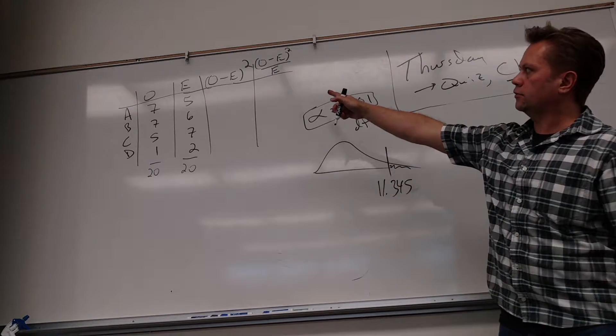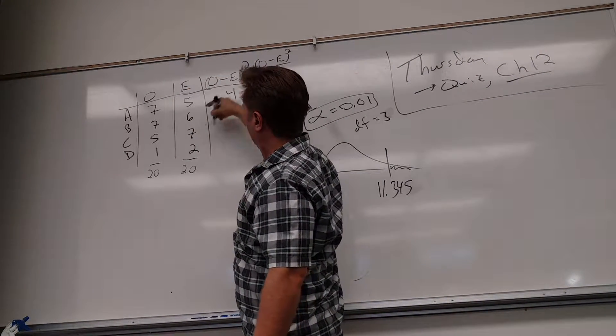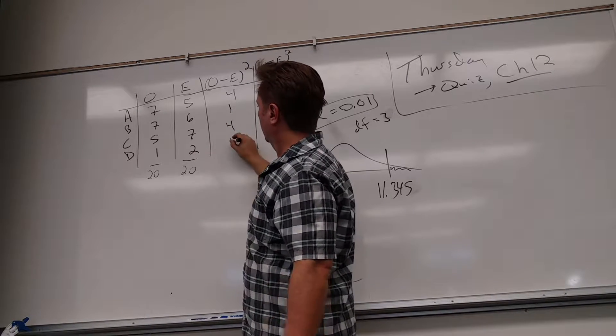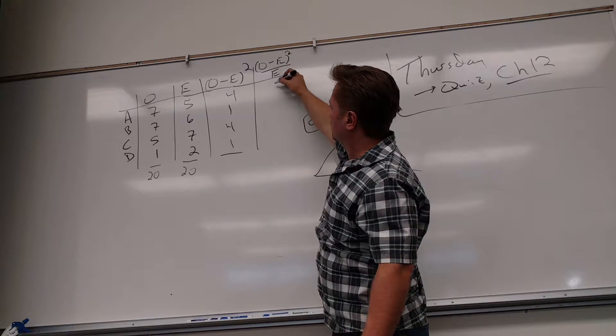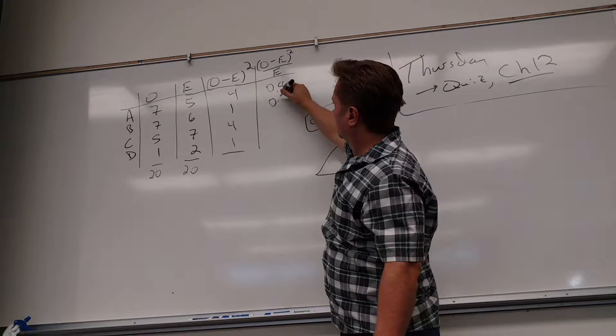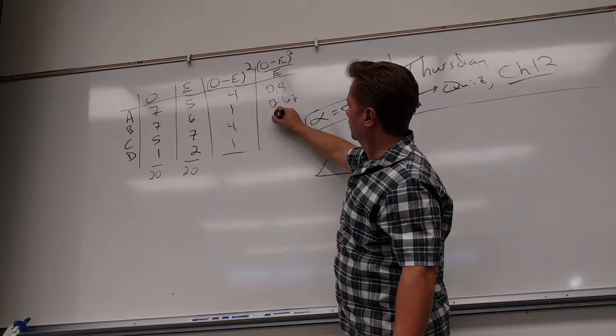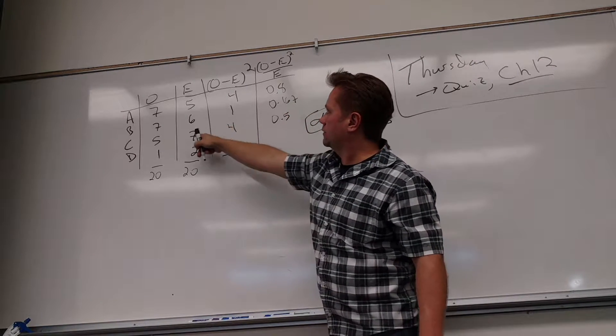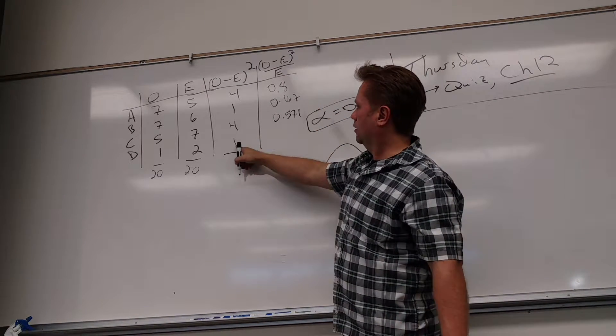So now the table, these are nice numbers. So I get 2 squared is 4, 1 squared is 1, 2 squared is 4, 1, we'll add those, it'll matter. And then you take each one divided by the expected, so here I get 0.8, 0.16, blah, blah, blah. 4 divided by 7, 0.571, and then 0.5.